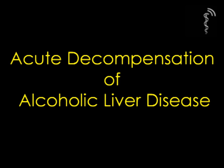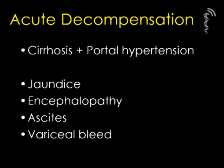Next we will deal with the acute decompensation of alcoholic liver disease in its presentation to the general medical hospital. Acute decompensation usually occurs in those with cirrhosis and portal hypertension, but can occur in the non-cirrhotic patient in severe alcoholic hepatitis. It is classified by the presence of jaundice, encephalopathy, ascites, or a variceal bleed.